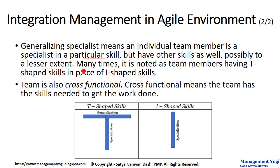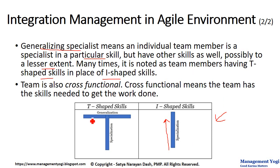This behavior is noted by having a T-shaped skill instead of an I-shaped skill, as shown in this diagram. In an I-shaped skill, there is only a vertical line — you grow in one specialization only. Whereas for a generalizing specialist, it is a T-shaped skill: the specialization is vertical, meaning one skill is very strong, and there is also some amount of generalization across other areas horizontally.